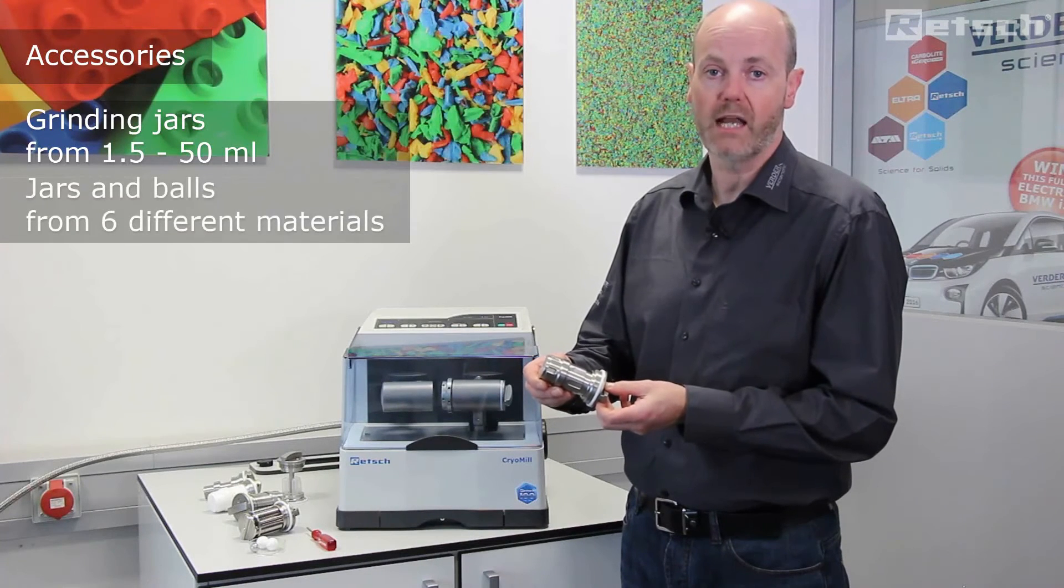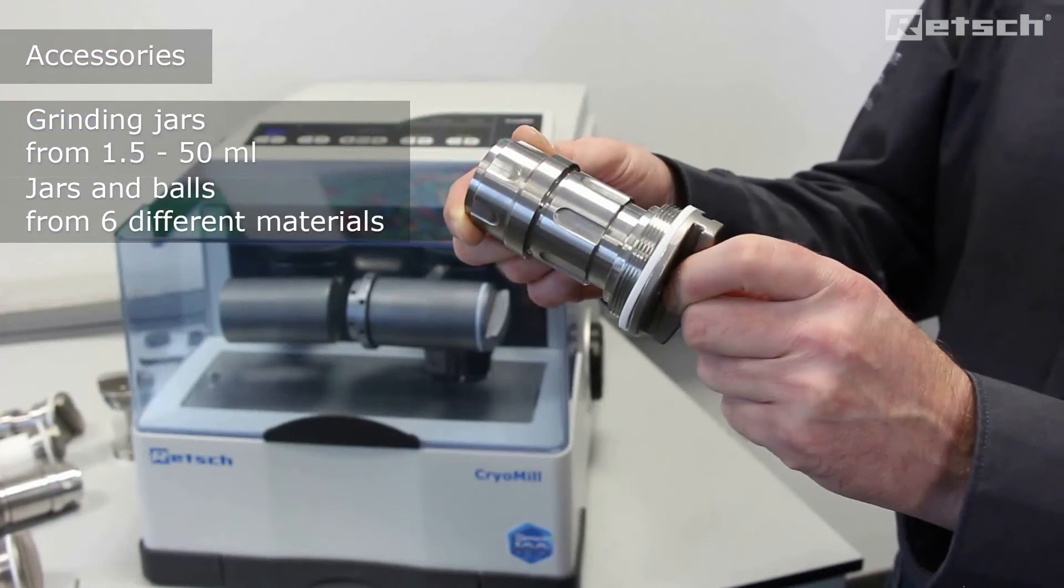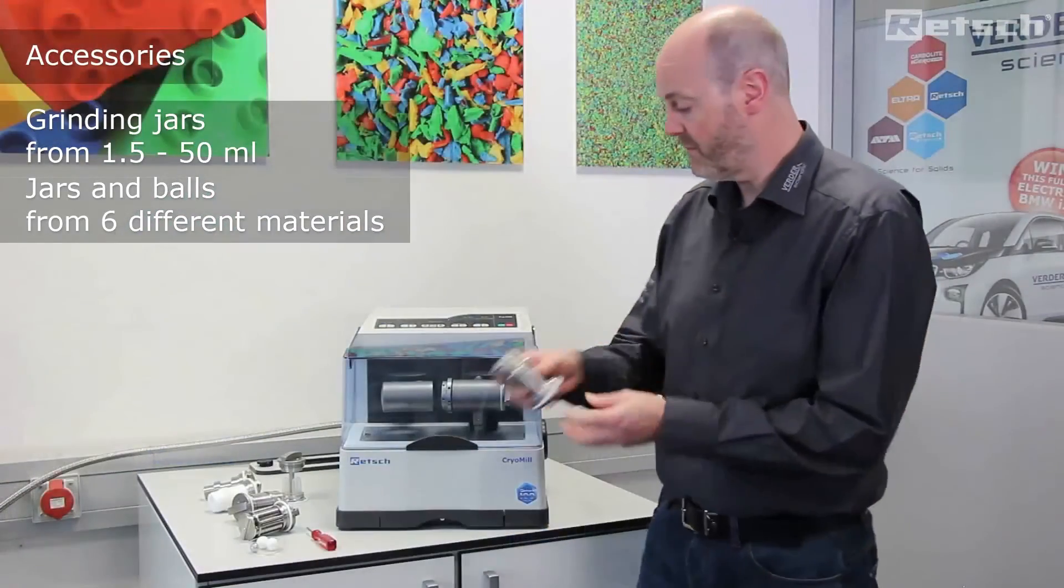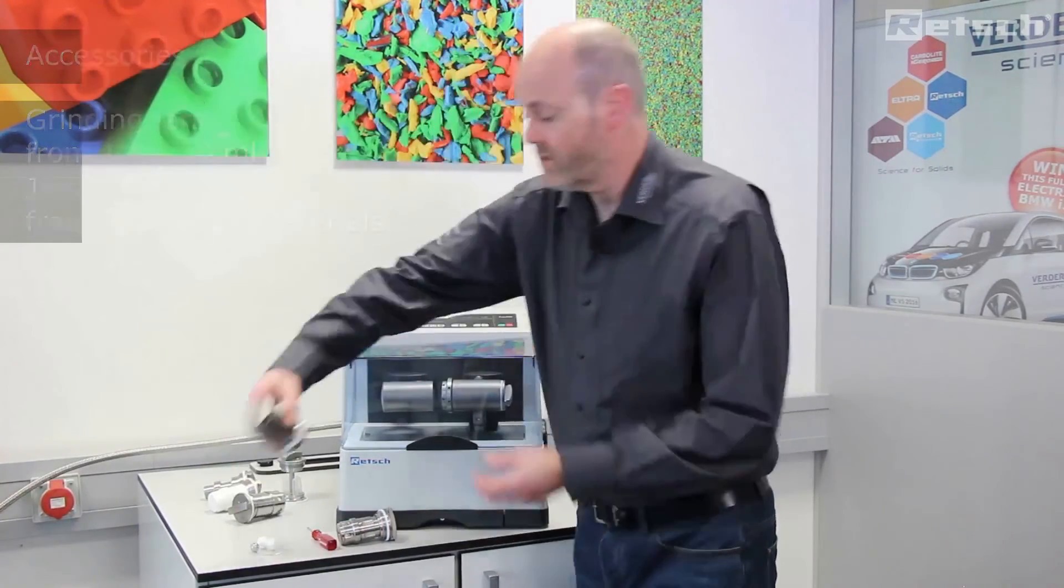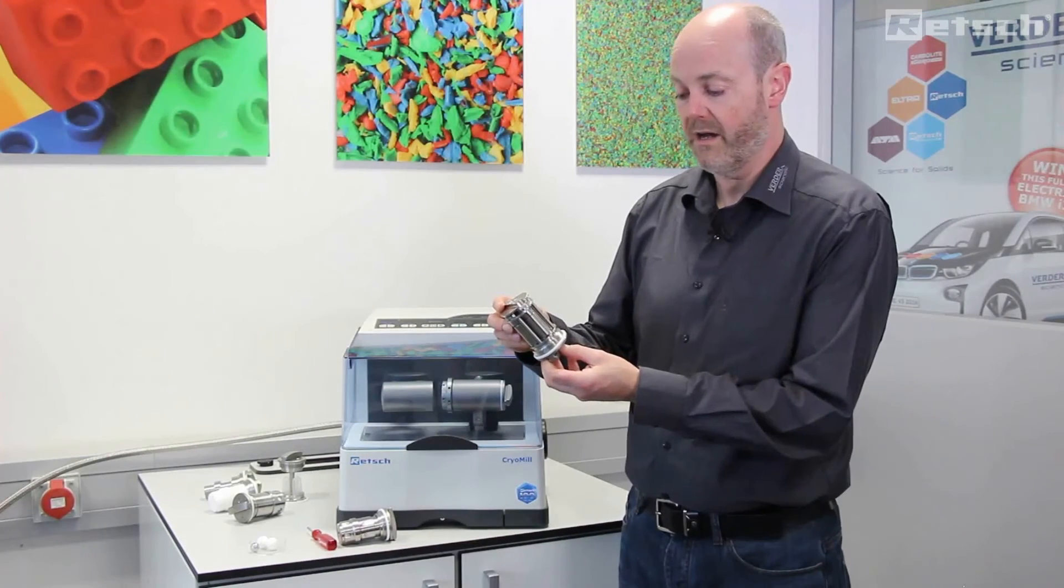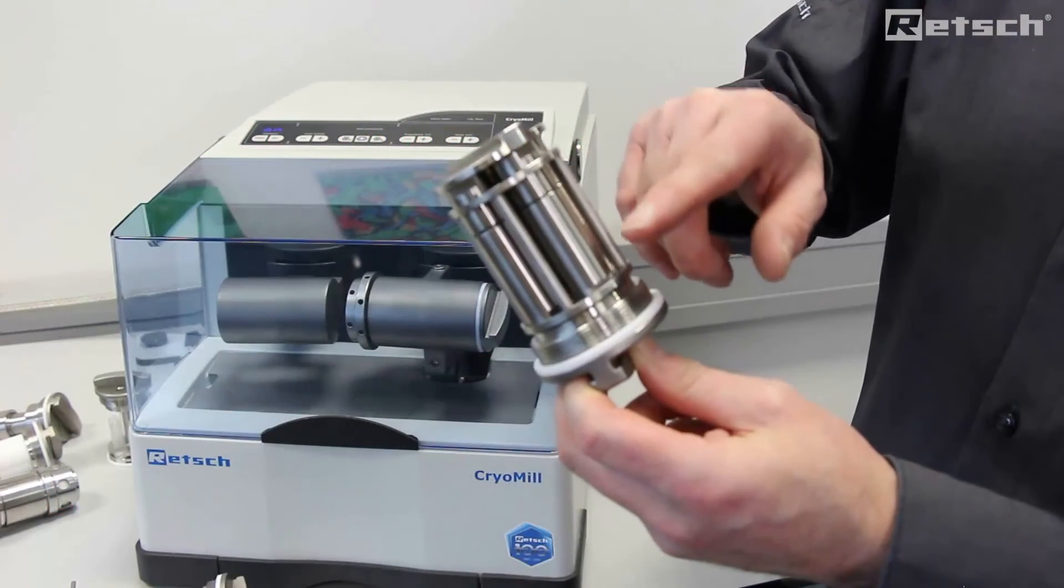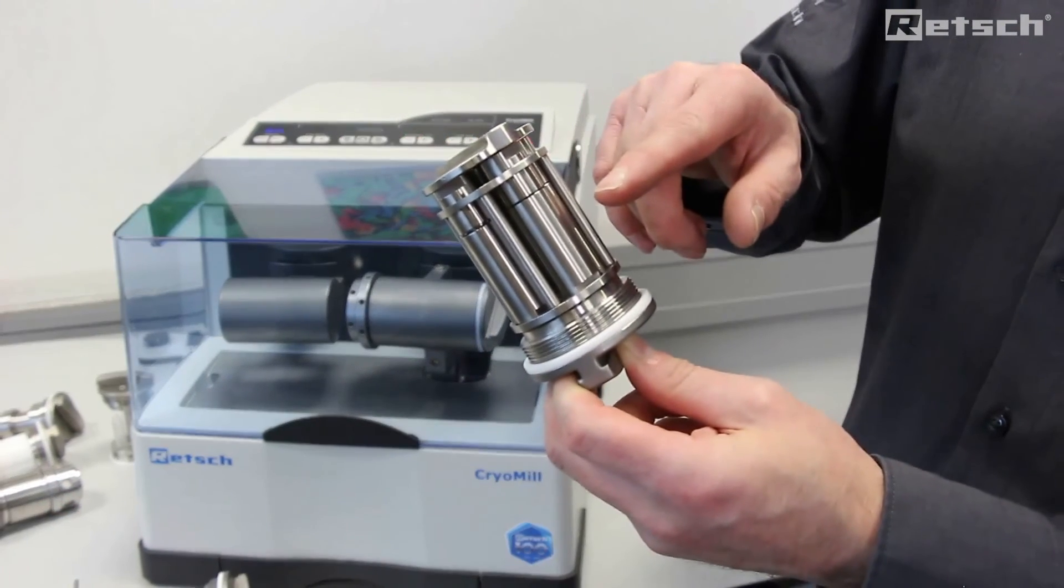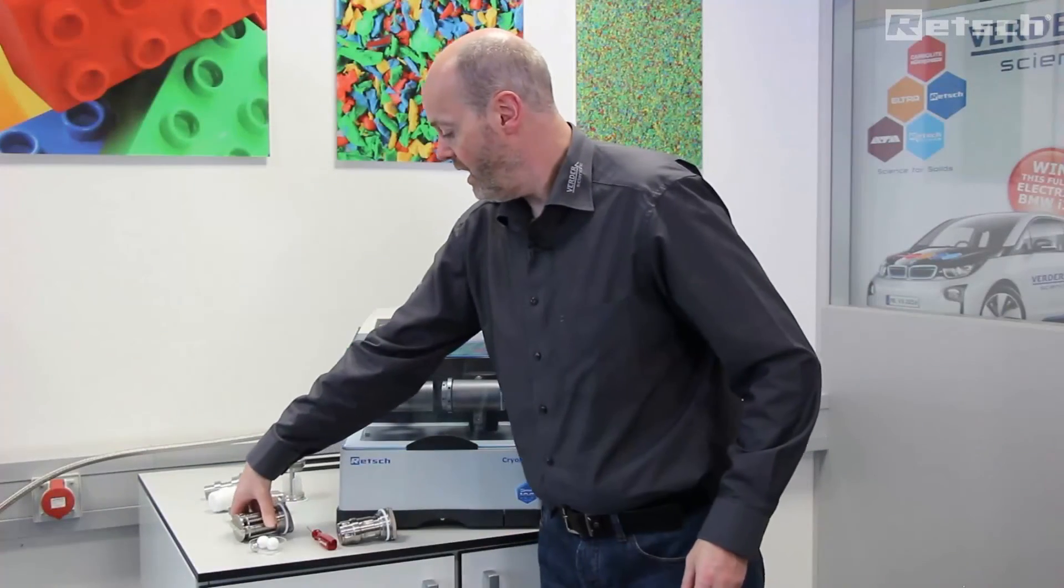The largest size as we show here is the 50 milliliter, and we go down to grinding jars as small as 5 milliliters. In this instance we have an adapter whereby we can run either 2 or 4 samples of this size simultaneously to facilitate a much larger throughput rate.